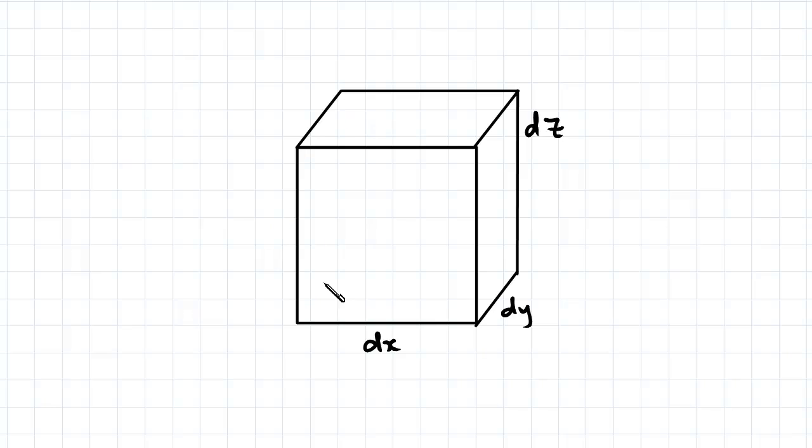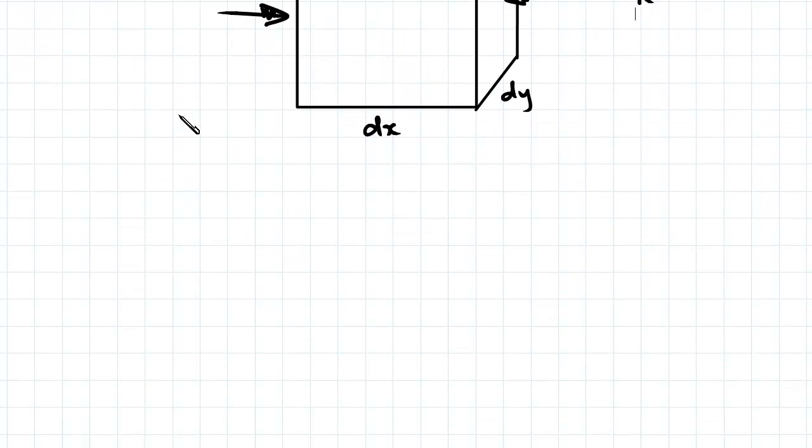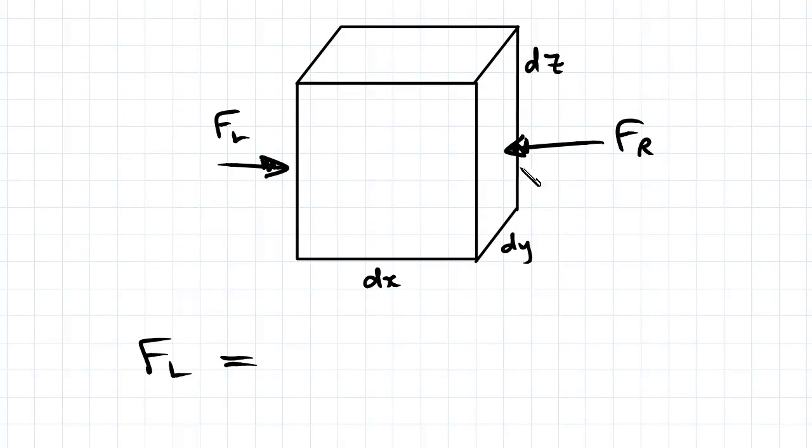On the left we'll have the pressure force multiplied by the area of the side of the element. So we'll have FL acting here, where FL equals the pressure on the left hand side, which we'll denote as pL, multiplied by the area which is dy times dz.